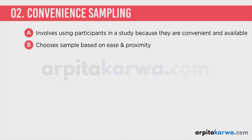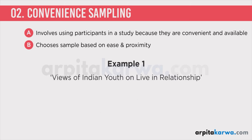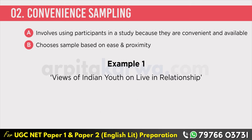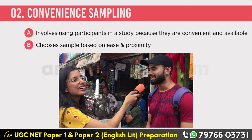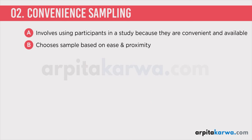Let's take an example to better understand convenience sampling. If you want to do research on what youth in India thinks about live-in relationships, rather than making a list of all the young people of India and randomly selecting and interviewing them, you decide to visit a mall near your house and interview the young people coming there. You are taking a sample from the entire population because those young people visiting the mall are also part of the population — part of the whole group of young people living in India — but you are not using random sampling. You are just going to a mall and interviewing all the young people coming there. This is convenience sampling.